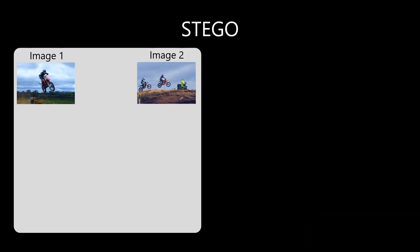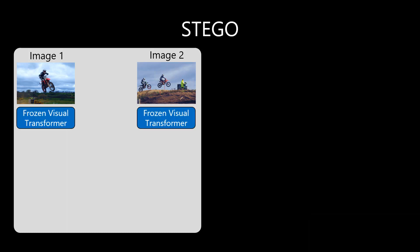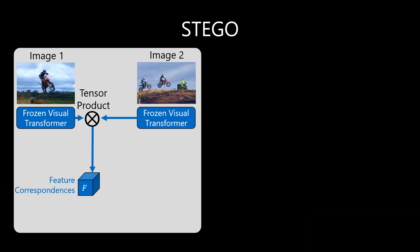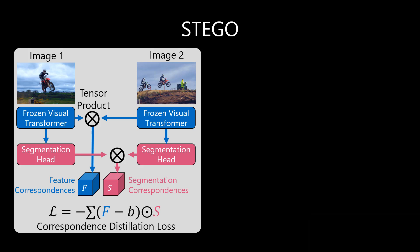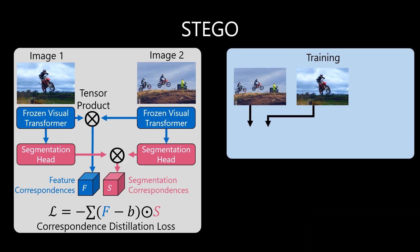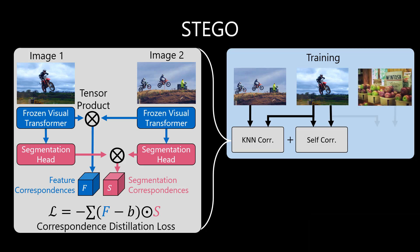Intuitively, Stego aims to predict classes for each object that have the same patterns as the features themselves. To accomplish this, we take images and featurize them with a frozen visual transformer. We extract their feature correspondence tensor to serve as the supervisory signal. We then take these visual features and learn a slight transformation that we call the segmentation head. This will output segmentation embeddings, which we hope will distill and amplify the structure of the features. We replicate this across pairs of images in k-nearest neighbors, images in themselves, and images in random other images in the collection.